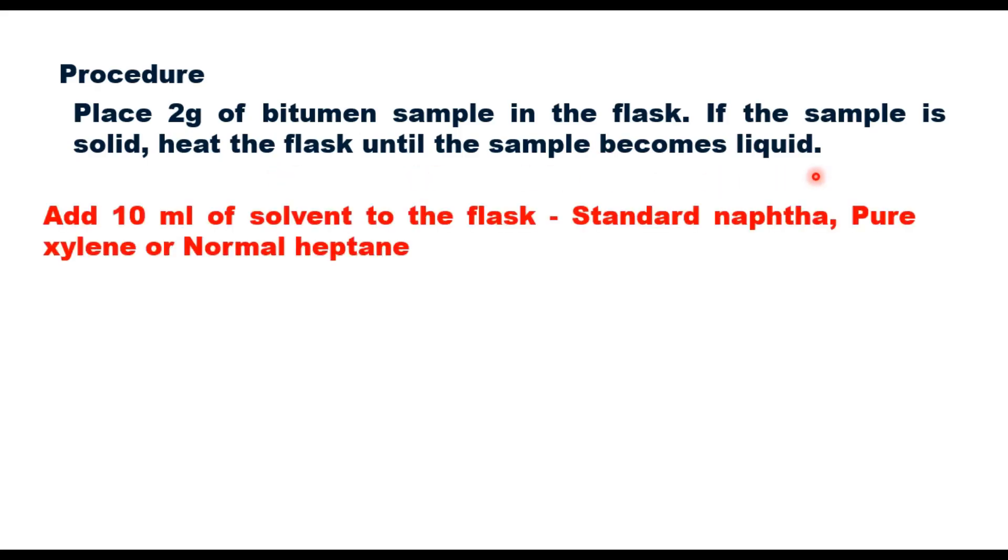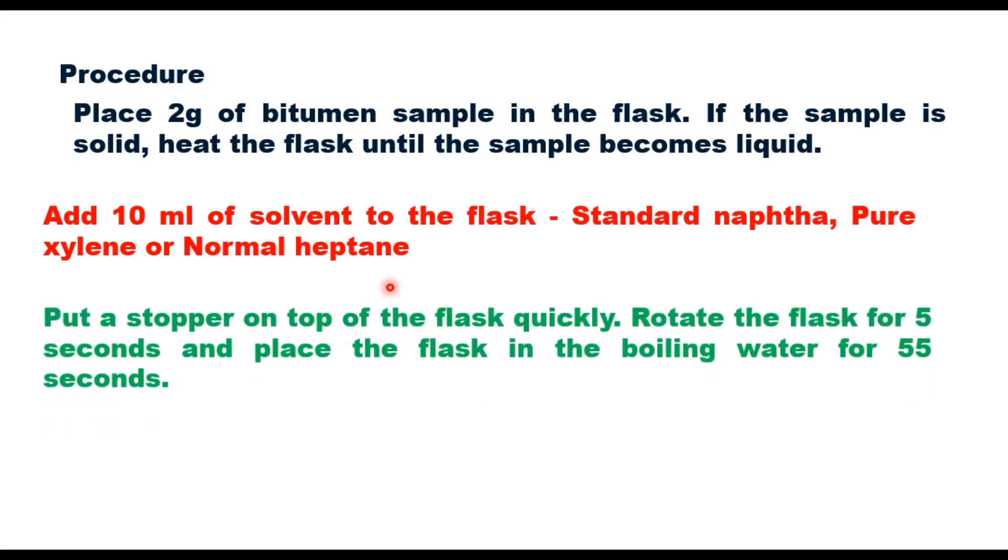Then add 10 ml of solvent to the flask. The type of solvent recommended in AASHTO is standard naphtha, pure xylene, or normal heptane. So 10 ml of the solvent is added to the bitumen, and then put a stopper on the top of the flask quickly.